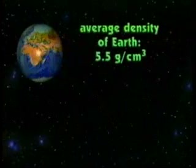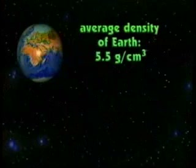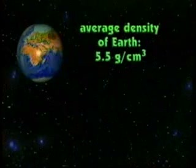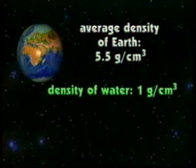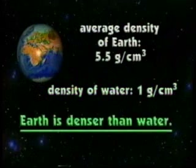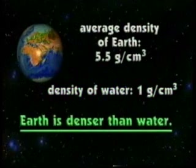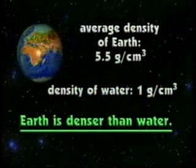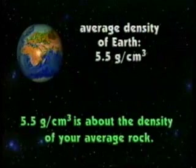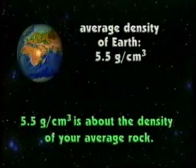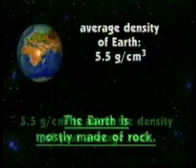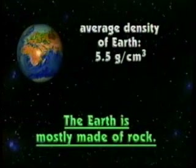The average density of the Earth is 5.5 grams per cubic centimeter. The density of water is 1 gram per cubic centimeter, so the Earth is a lot denser than water — more like rocks and metal. 5.5 is about the density of your average rock, so we might figure the Earth is mostly made of rock.